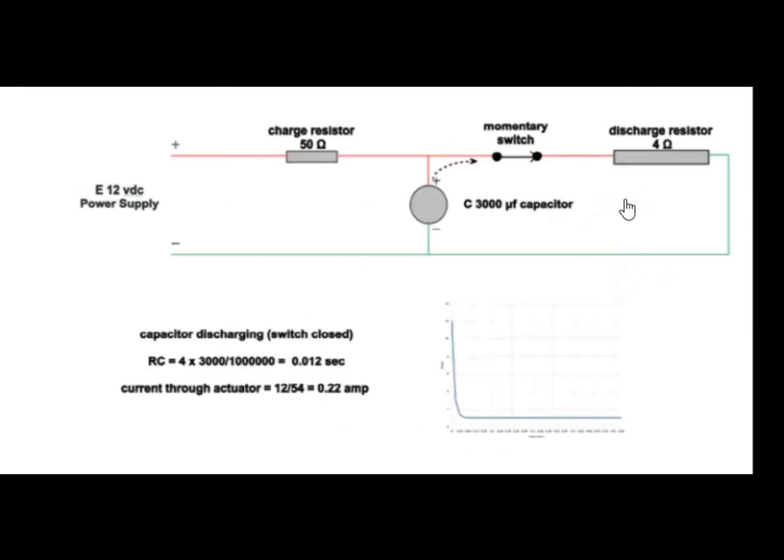So let's now talk about the discharge part of the cycle. In our case the discharge resistor is the coil on the switch machine and we have a momentary contact switch. When you close it, the charge is rapidly depleted through the resistance according to this curve. In this case the RC time constant is 12 one-thousandths of a second, almost instantaneous, so the switch is rapidly operated.